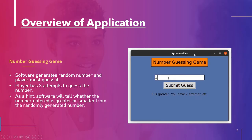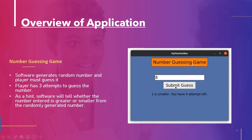This is the application that we are going to create. The software generates a random number and the player must guess it. The player has three attempts to guess the number — you can change the number of attempts as well. As a hint, the software will tell whether the number entered is greater or smaller than the randomly generated number, so the user can adjust their input accordingly.